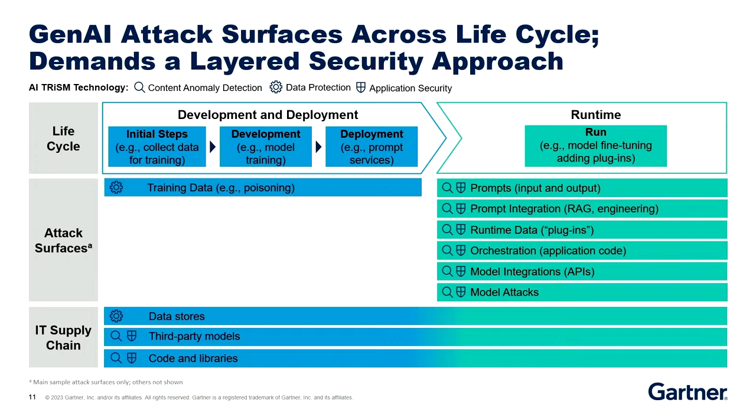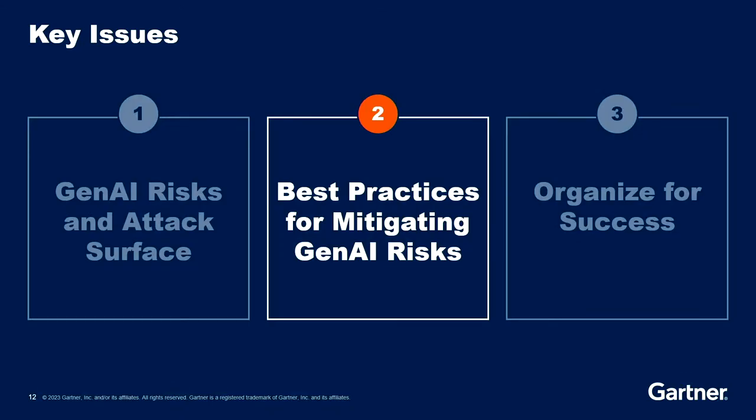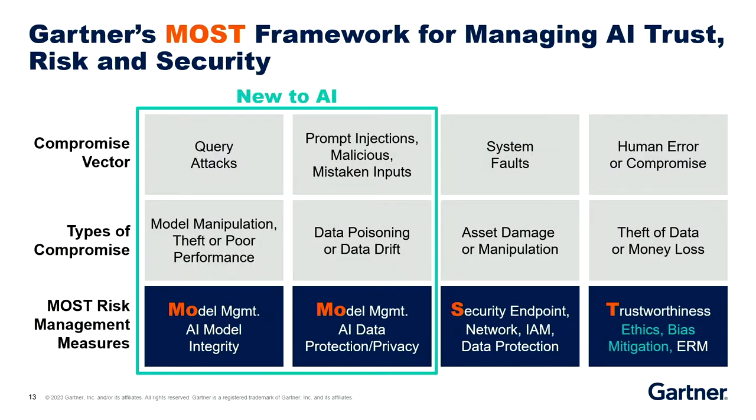The moral of the story is this is a new attack surface and a new compromise surface — it's not all bad guys; it's intentional, non-intentional, and there are new things for you to think about. When we think about best practices, we call it AI Trust, Risk, and Security — AI TRiSM — because it's not just security, not just bad actors. It's about how you make your model transparent so you trust it, how you know it's behaving the way it's supposed to, how you manage your liability and reputation risk, and finally, how you keep hackers out. There are new vectors, new compromises, and new risk management measures you have to take.